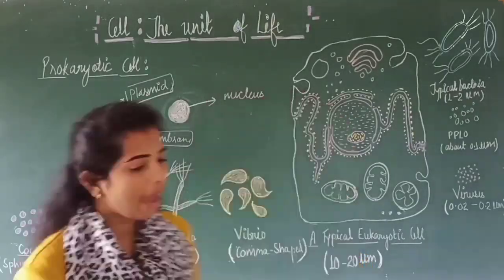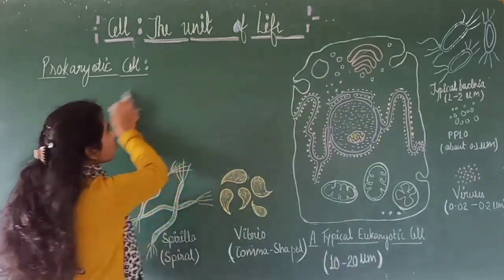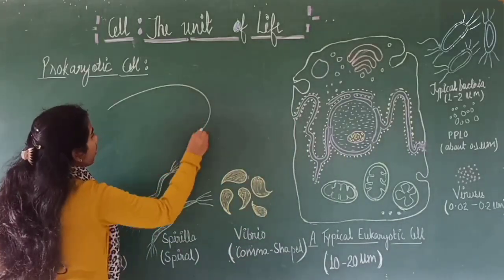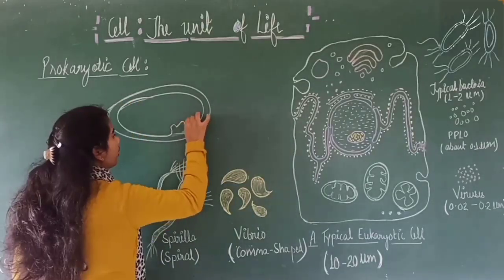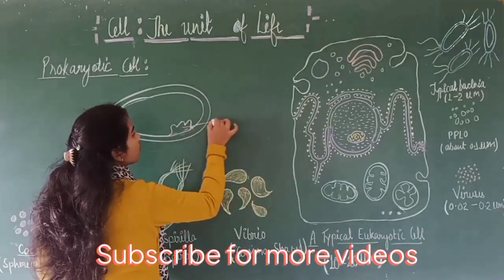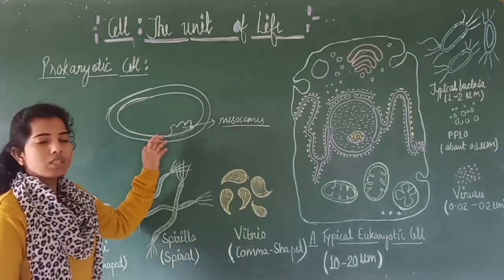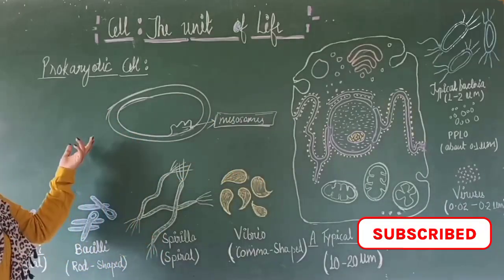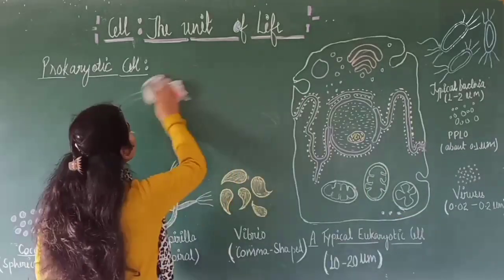Prokaryotic cells have a special type of body known as inclusion bodies. In case of bacteria, the cell membrane is folded. These in-foldings of the cell membrane form a cell structure which is known as mesosomes. Mesosomes are the in-foldings of the cell membrane and are found in bacteria.